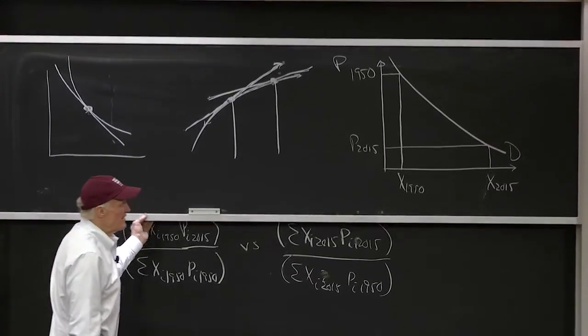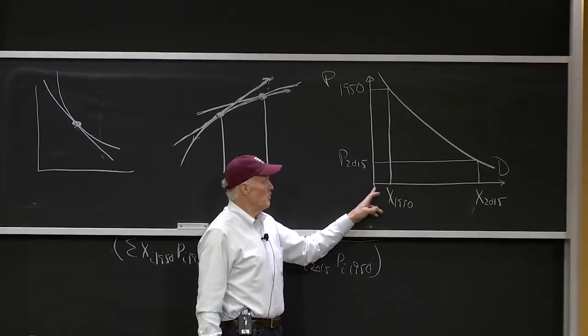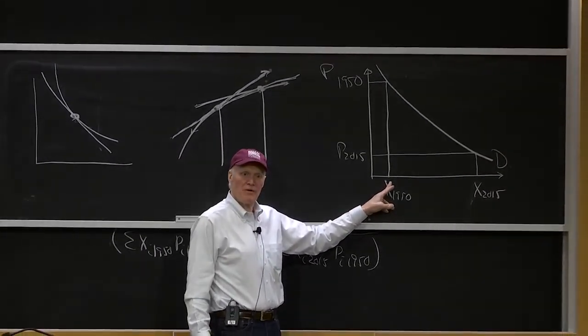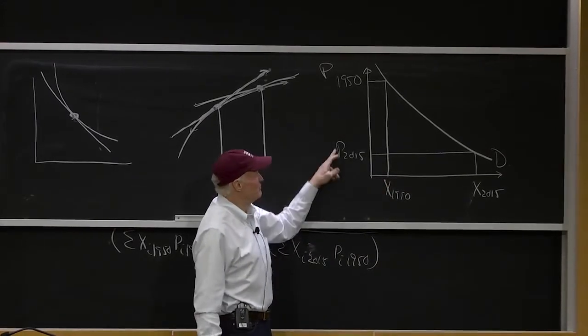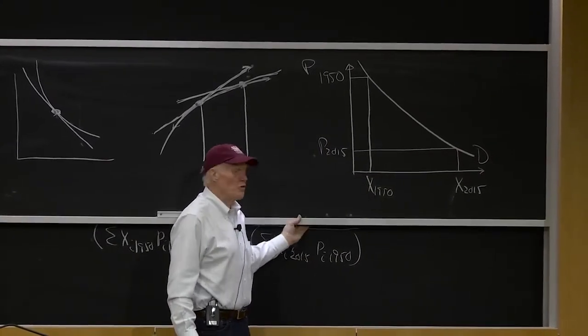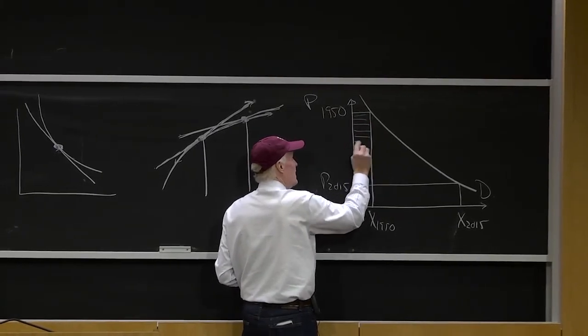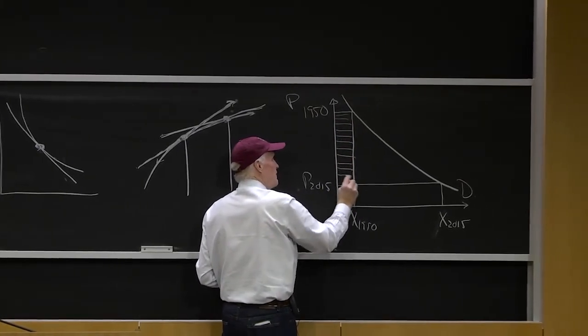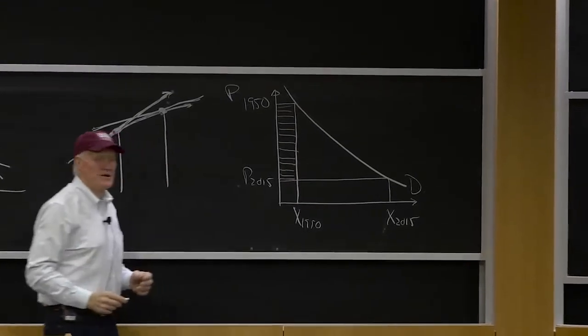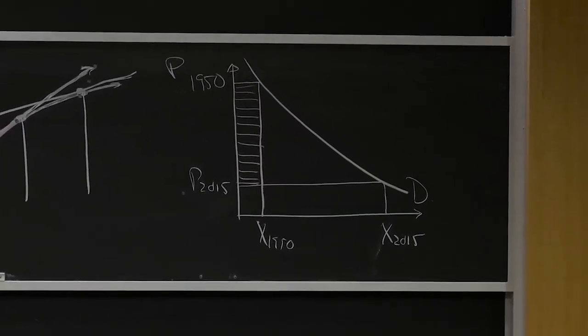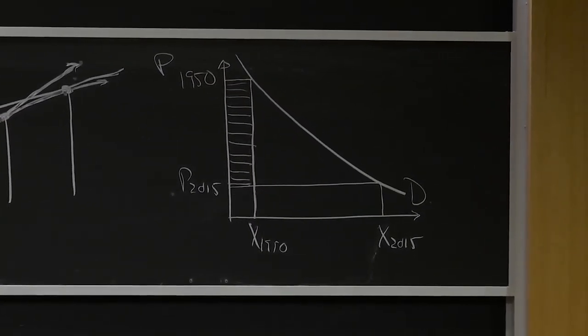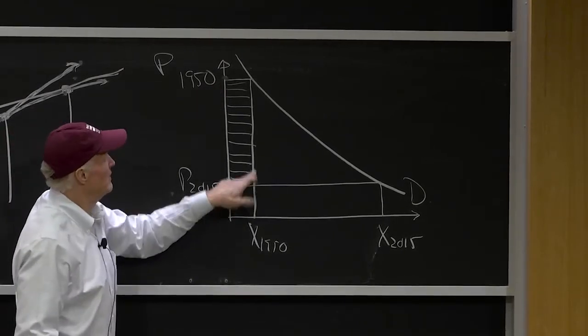Well, what we're doing is we're asking how much cheaper was the 1950 bundle in 2015? So the reduction in the cost of living that we're saying would be measured by that rectangle here. That would be the reduction in the cost of living. We'd say the same bundle I was buying in 1950 would cost this much less.